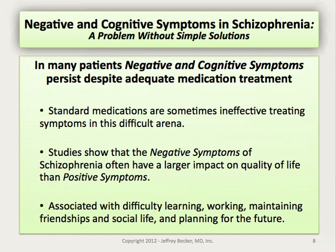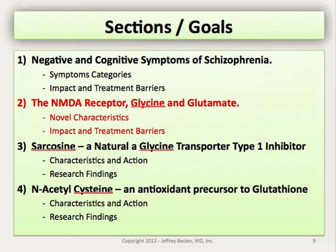Studies show clearly that the negative symptoms of schizophrenia often have a larger impact on quality of life than positive symptoms. They're associated with learning issues, difficulty working and maintaining friendships, poor social life, and difficulty planning for the future. In the next section of this talk, I'll be discussing the NMDA receptor and the two neurotransmitters glycine and glutamate that act as dual activating neurotransmitters for that receptor, and also the contribution of NMDA receptor dysfunction to the negative and cognitive symptoms of schizophrenia.